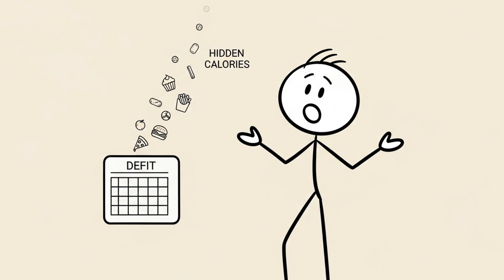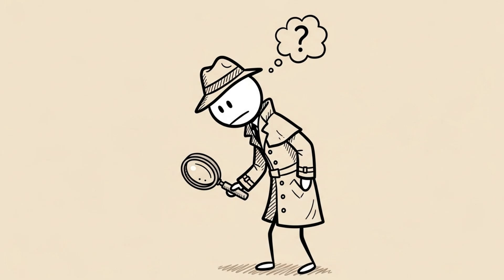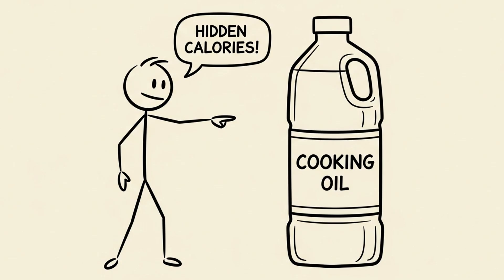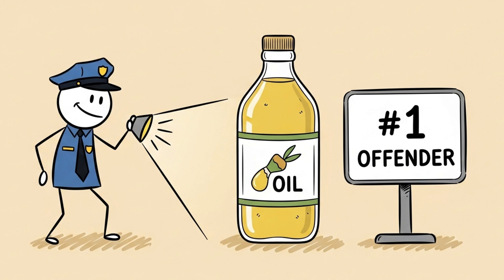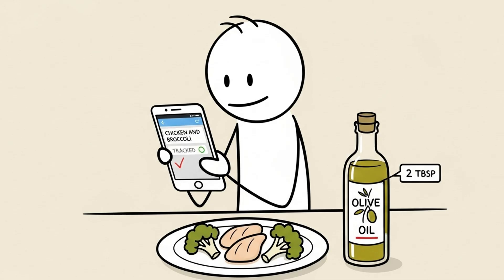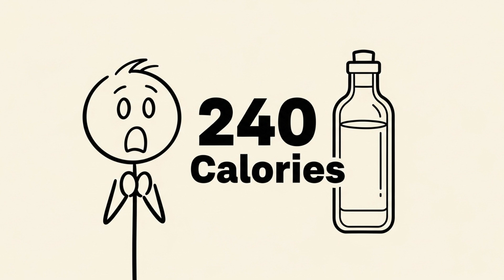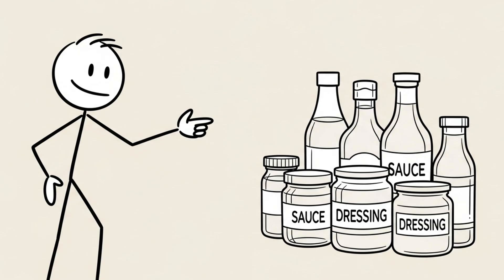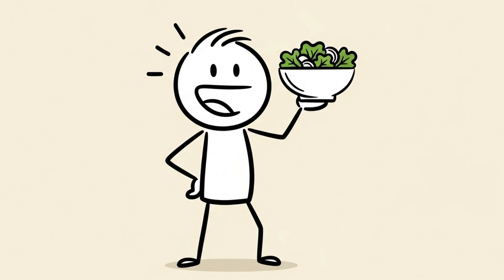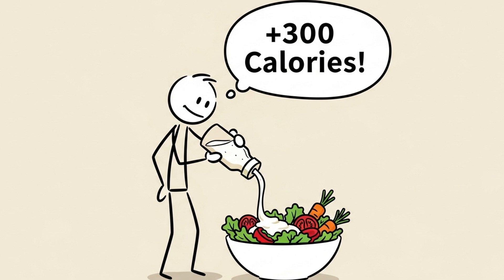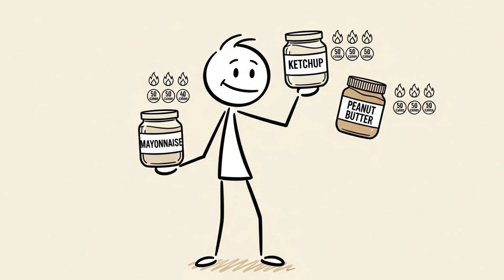These are the hidden calories that erase your deficit. Where do they hide? 1. Oils and fats. This is the number one offender. You track the chicken and broccoli, but you don't track the two tablespoons of olive oil you cooked it in. That's 240 calories completely untracked. 2. Sauces and dressings. That healthy salad is great. But the half cup of creamy Caesar dressing you put on it? That's another 300 plus calories. Ketchup, mayonnaise, peanut butter. These are incredibly calorie dense.